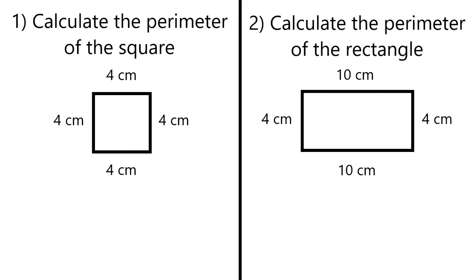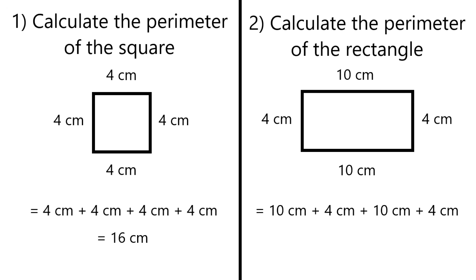Now when answering question one we just have to add up four and four and four and four, and that's going to be equal to 16 centimeters — so that's the perimeter of the square. And the perimeter of the rectangle is just going to be 10 centimeters plus four centimeters plus 10 centimeters plus four centimeters, and it's just going to be 28 centimeters.